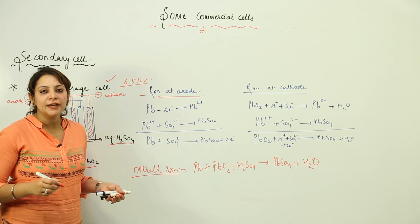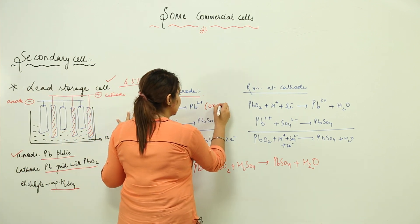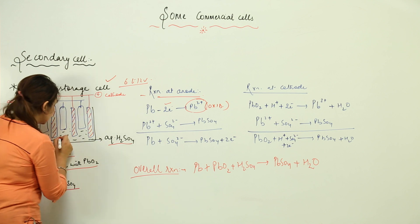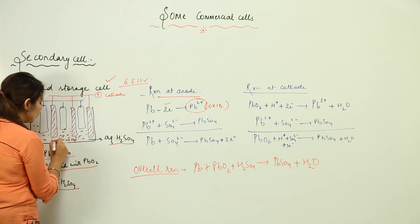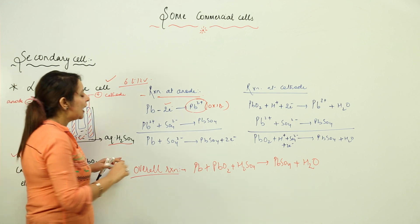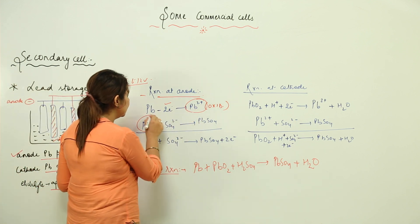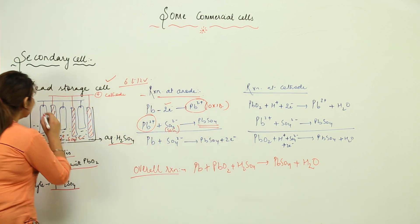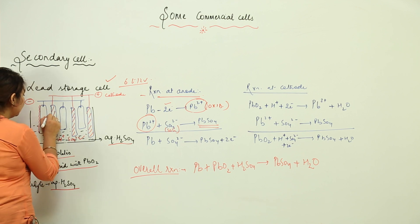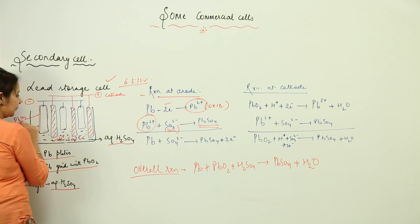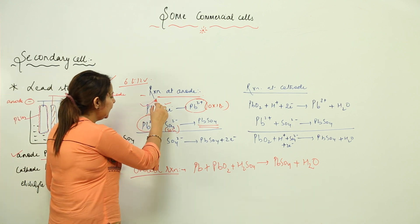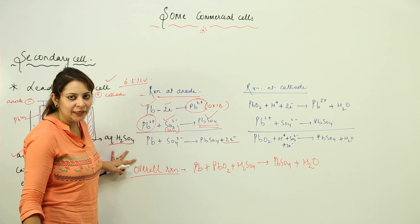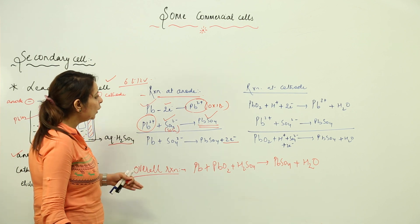At the anode, lead has the tendency to get oxidized, so it loses two electrons forming Pb²⁺. This Pb²⁺ then reacts with the sulfate ions present in the electrolyte solution, forming PbSO₄, which deposits as a layer on the anode. The overall anode reaction is: Pb + SO₄²⁻ → PbSO₄ + 2e⁻.